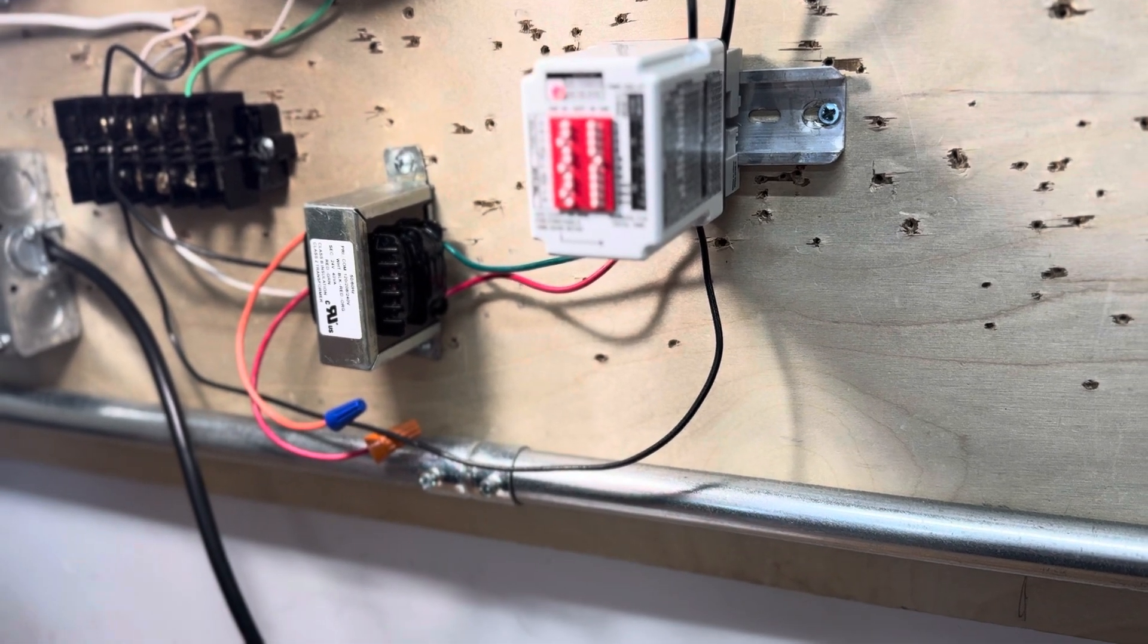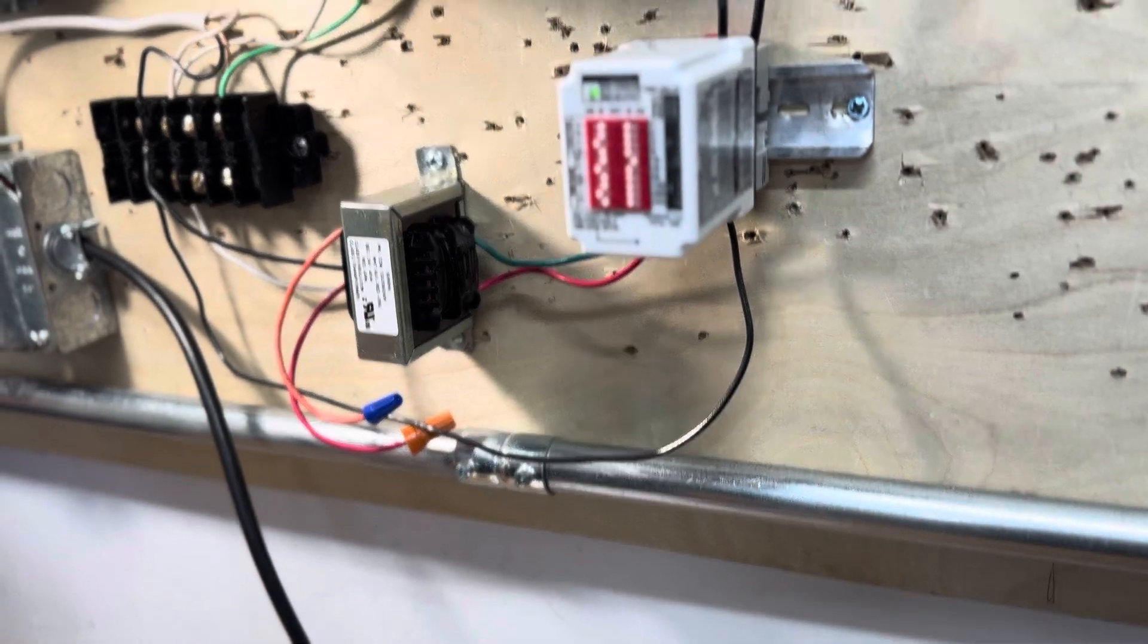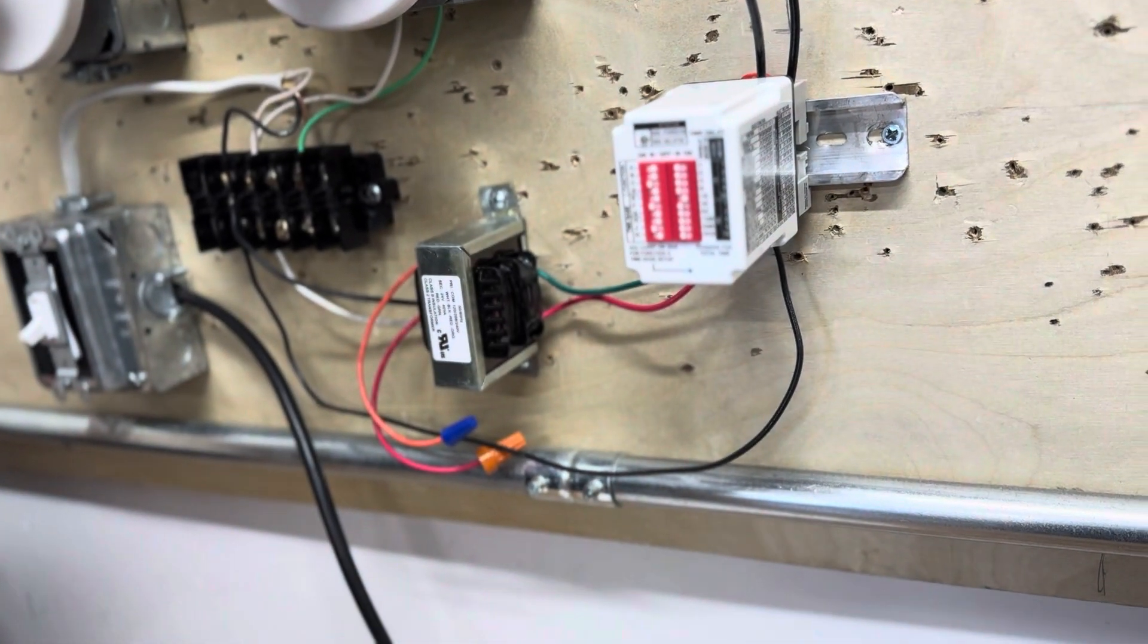We're going to wait for this to alternate one more time and then we will de-energize the circuit. There we have it. So we will switch off the single pole and disconnect our power source.